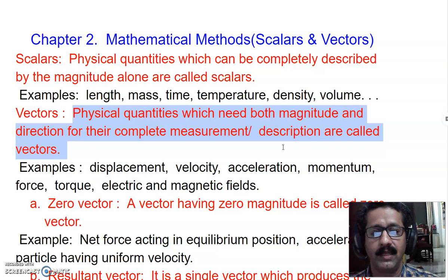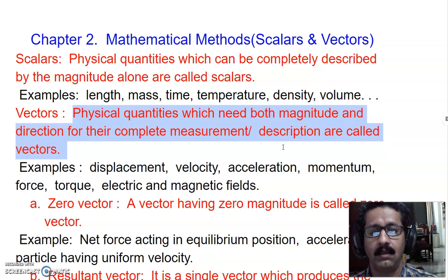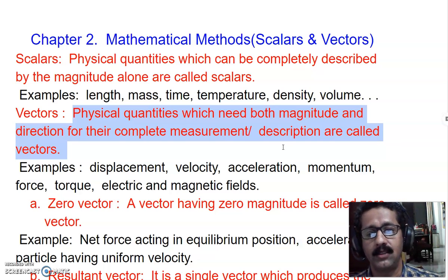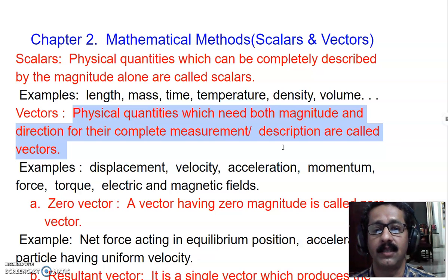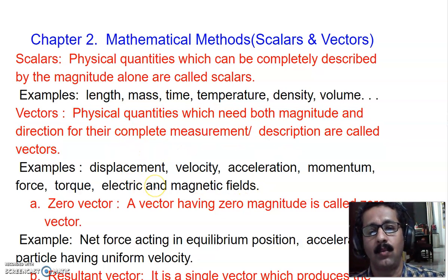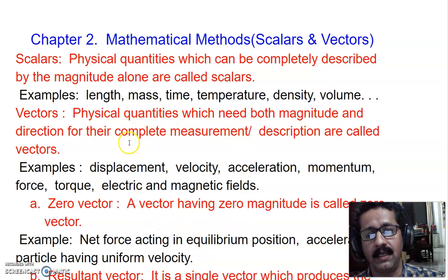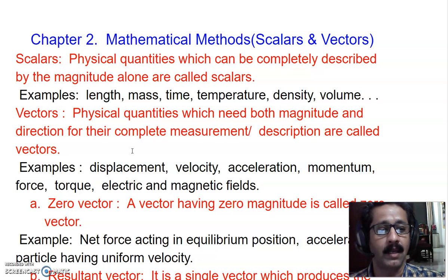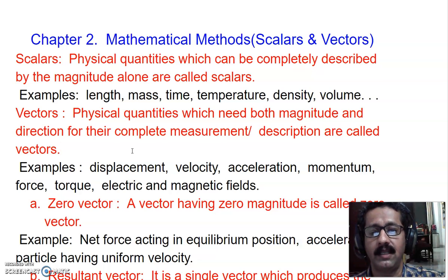For example, displacement is the shortest distance between two points — from the starting point to the end point. Even if a particle has covered distance, its displacement can be zero. For instance, if a particle performs one complete circular motion, it comes back to the same point, so displacement is zero, but distance covered equals the circumference, 2πr. So displacement is different from distance.